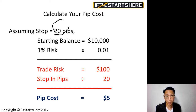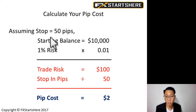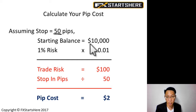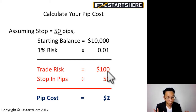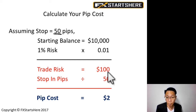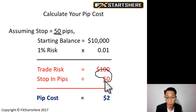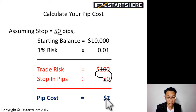Now let's look at a second example. This time, assuming our stop loss is 50 pips. Same starting balance of $10,000, we are going to risk 1%, so $10,000 times 0.01 equals $100 — the dollars we risk per trade never changes, it's always the same. But if your stop loss is now 50 pips instead of 20 pips, then our pip cost becomes $100 divided by 50, which is $2 per pip.